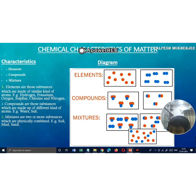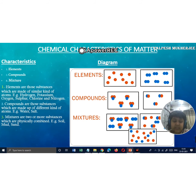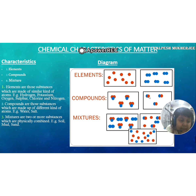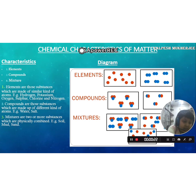And mixtures are two or more substances which are physically combined. Examples: soil, mud, and sand. Soil is made up of so many substances, and mud and sand as well. In mixtures, multiple substances are physically combined and dissolved together.